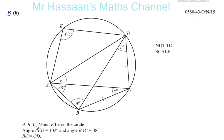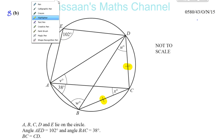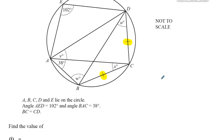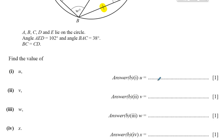It says angle AED is 102 degrees. Angle BAC is 38 degrees. BC is equal to CD — now that's a very important point here, that's going to help us most probably. This means we have an isosceles triangle here. That's all the information they give us, and they told us to find angles U, V, W and X. It doesn't really matter which order you find them in, as long as you find them.